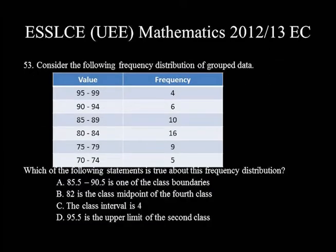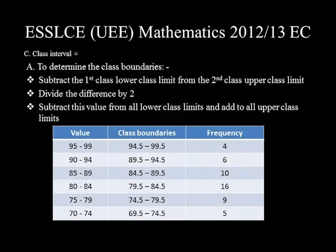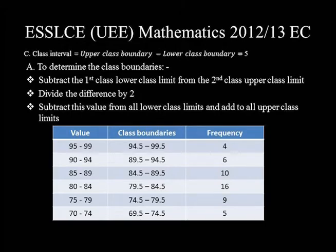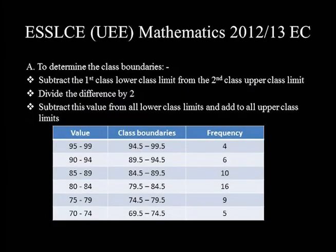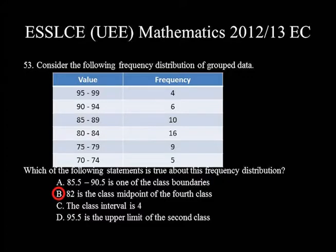Choice C: The class interval is 4. Class interval is simply the difference of the class boundaries — upper class boundary minus lower class boundary — which equals 5 in all classes. Thus, choice C is not true. Choice D: 95.5 is the upper class boundary of the second class. The upper class boundary of the second class is 94.5. So choice D is not true. The correct answer is choice B.